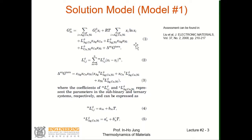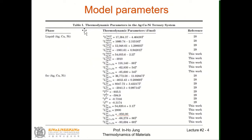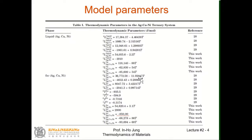Let's look at what parameters they optimized in this system. This is the table summarizing their model parameters — the liquid phase and the FCC solution phase. For the liquid solution, you can see Ag-Cu L0 and L1 parameters for the Ag-Cu binary system, the Cu-Ni binary system, and the Ag-Ni binary system. Then there are three ternary excess parameters. Let's look at how to create this ternary liquid solution.